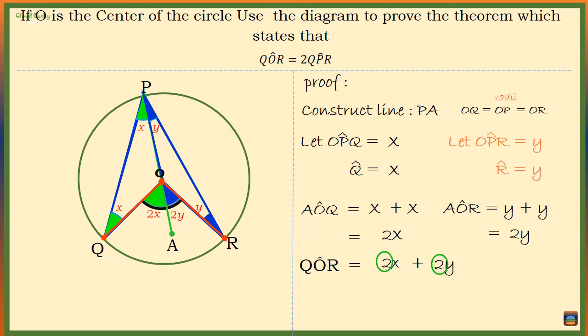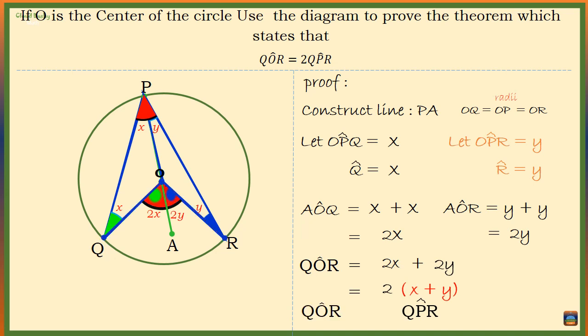X plus Y is equal to angle QPR. That means angle QOR at the center of the circle is equal to 2 times angle QPR at the circumference of the circle. This proves that the angle at the center of the circle is two times the size of the angle at the circumference.